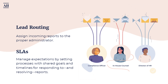Two features that are often overlooked but so critical: your employee feedback management platform should include a lead routing and SLA feature. Lead routing allows employers to assign incoming reports to the proper administrator. SLAs, or service level agreements, allow employers to manage expectations by setting processes with shared goals and timelines for responding to and resolving reports.